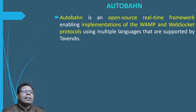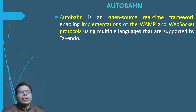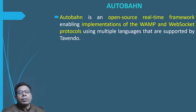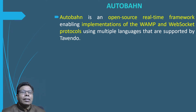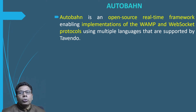Autobahn is an open source real-time framework enabling implementations of WAMP and the web sockets protocol using multiple languages supported by Tevendo. Autobahn is a project which is a real-time framework enabling the implementation of both WAMP and web socket protocol in multiple languages.